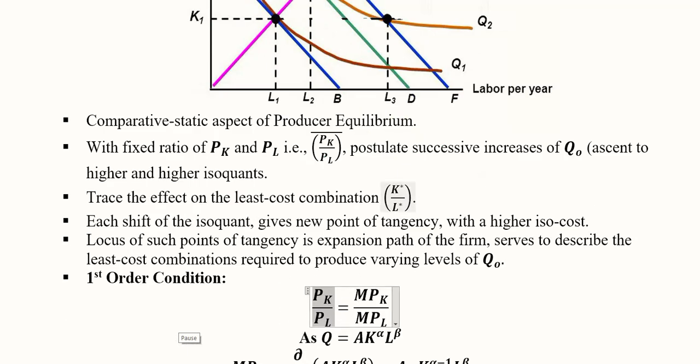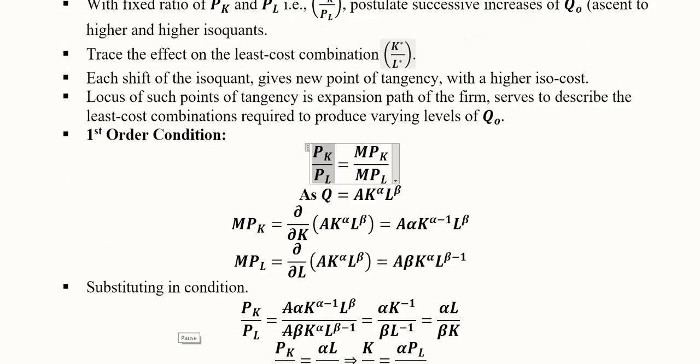So these two values will be the same. PK over PL is the slope of the isocost line, and MPK over MPL is the slope of the isoquant, the ratio of the marginal products of labor and capital.